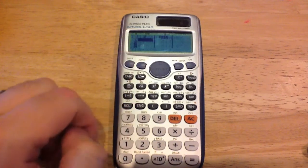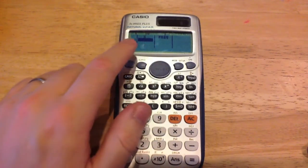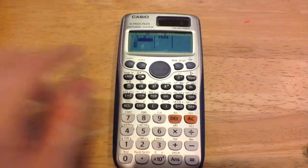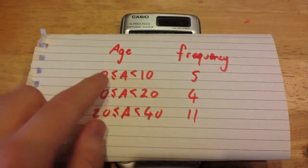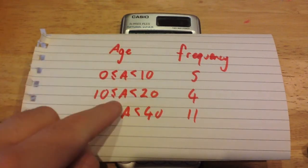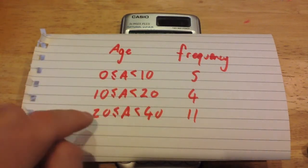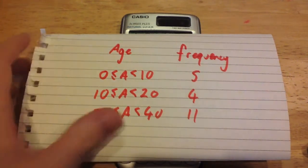Now we've got some columns, we've got the first one which is X, and the second one which is frequency. Now we do need to work out our midpoints ourselves. So for the first category, our midpoint would be 5, for the second category it would be 15, and for the third one it's going to be 30.